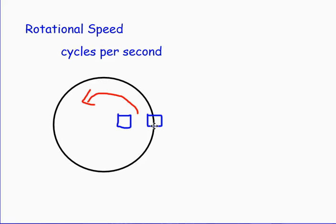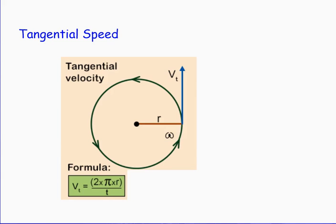If this outside box takes five seconds to go all the way around the circle, the inside box is also going to take five seconds to turn around. However, the outside box is going to be taking a longer path than the inside box. So the outside box will be going faster — but not in terms of rotational speed. That would be in terms of tangential speed.